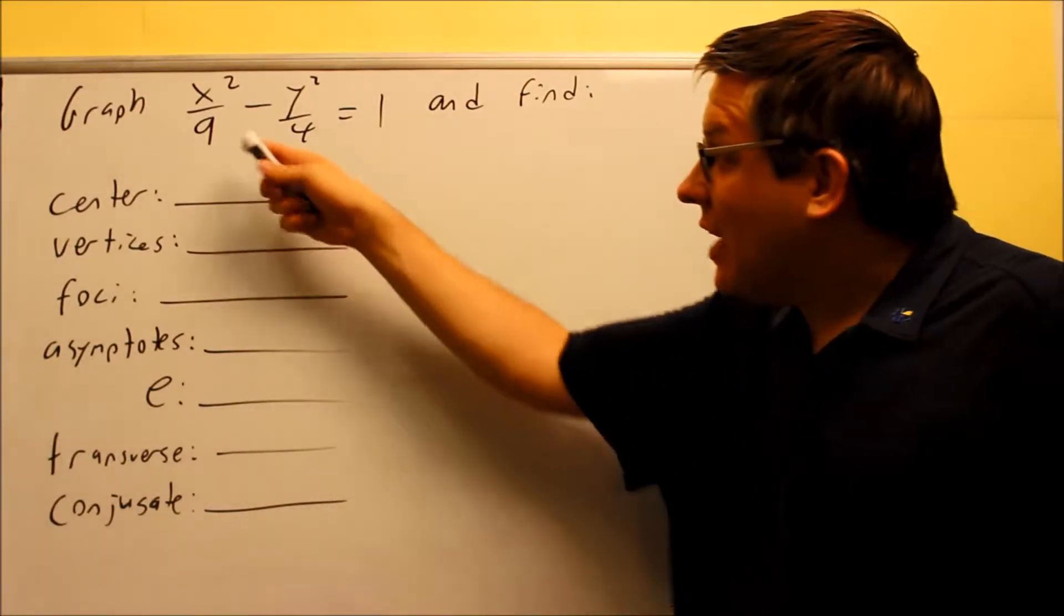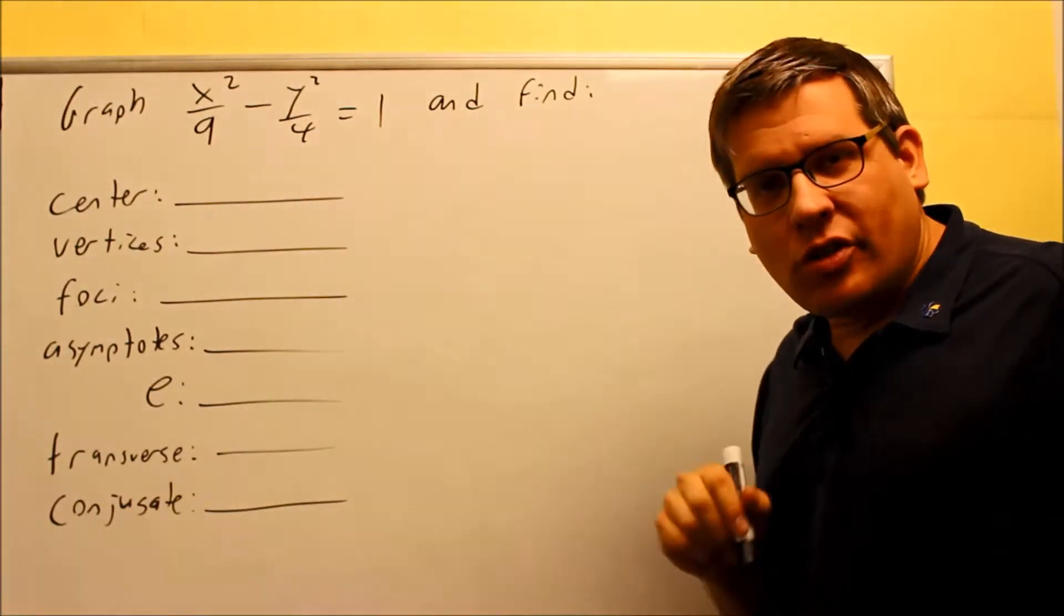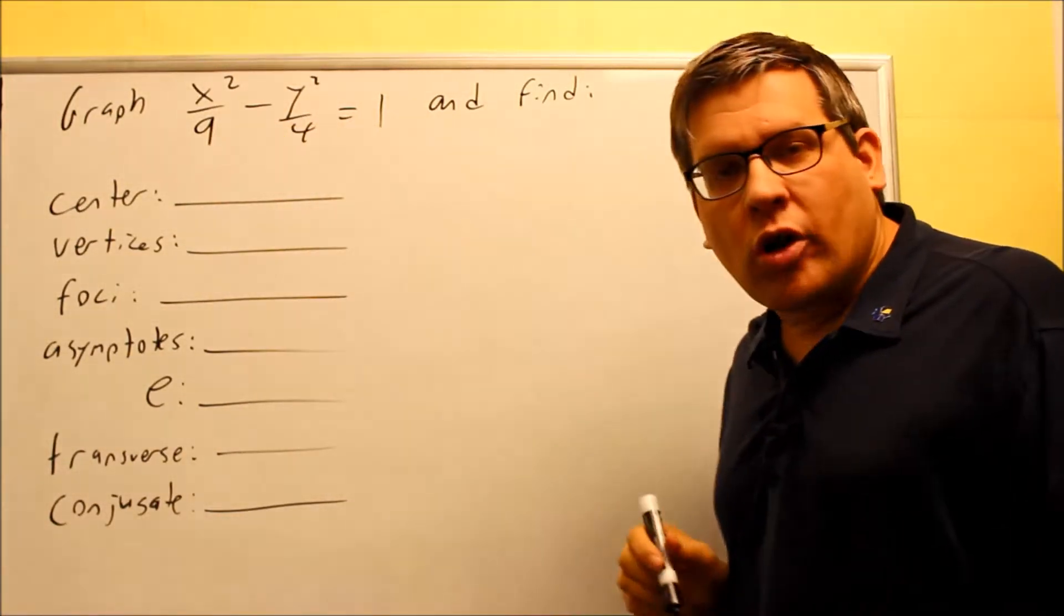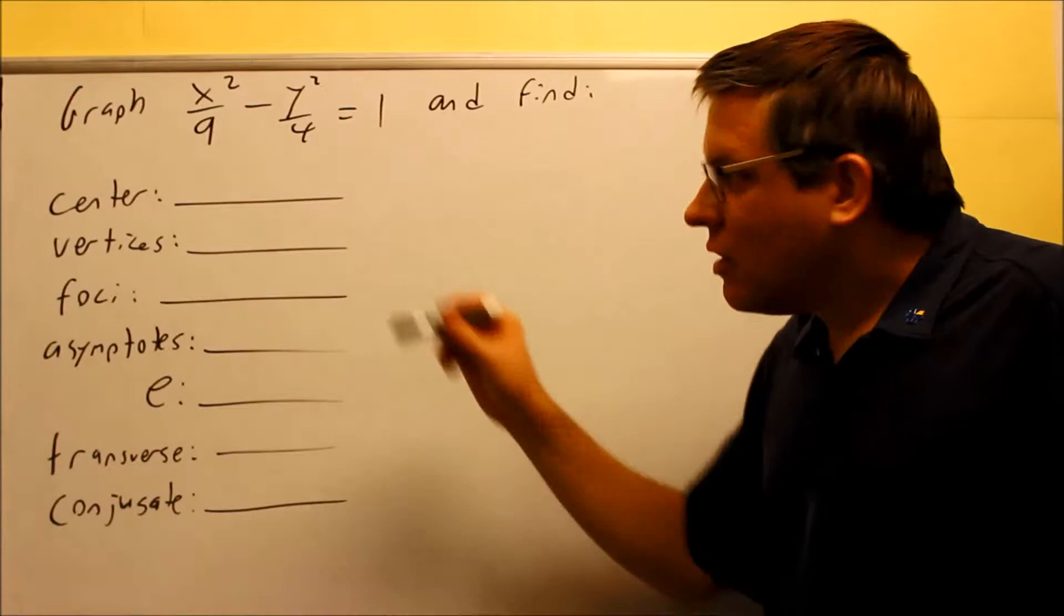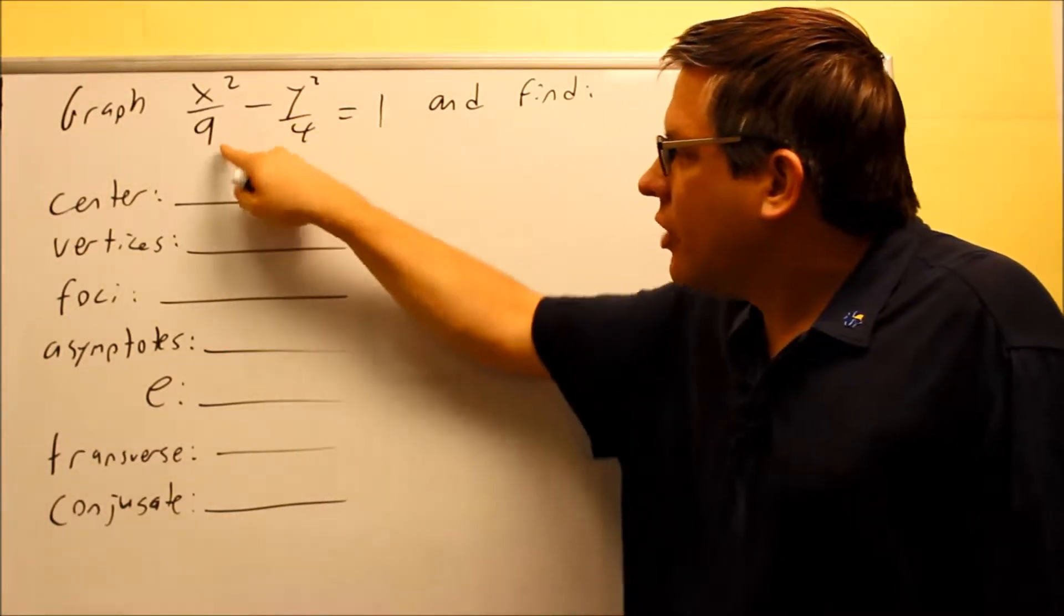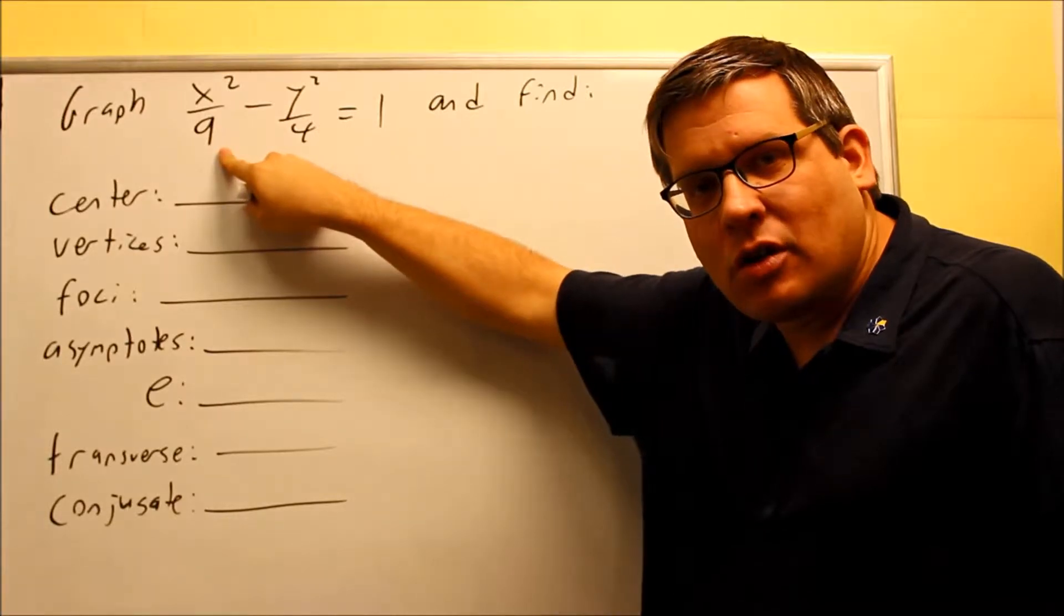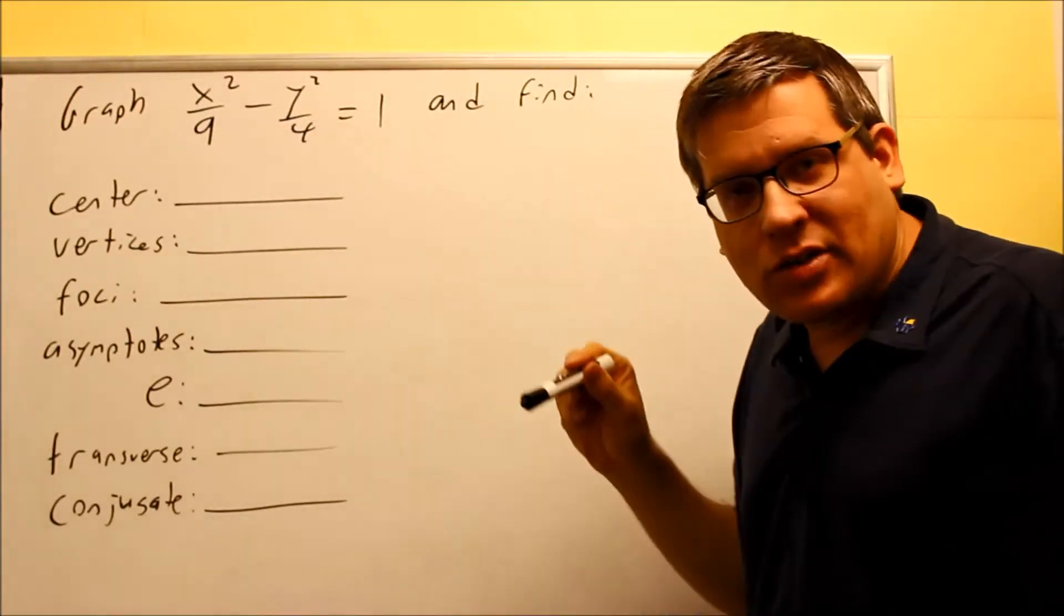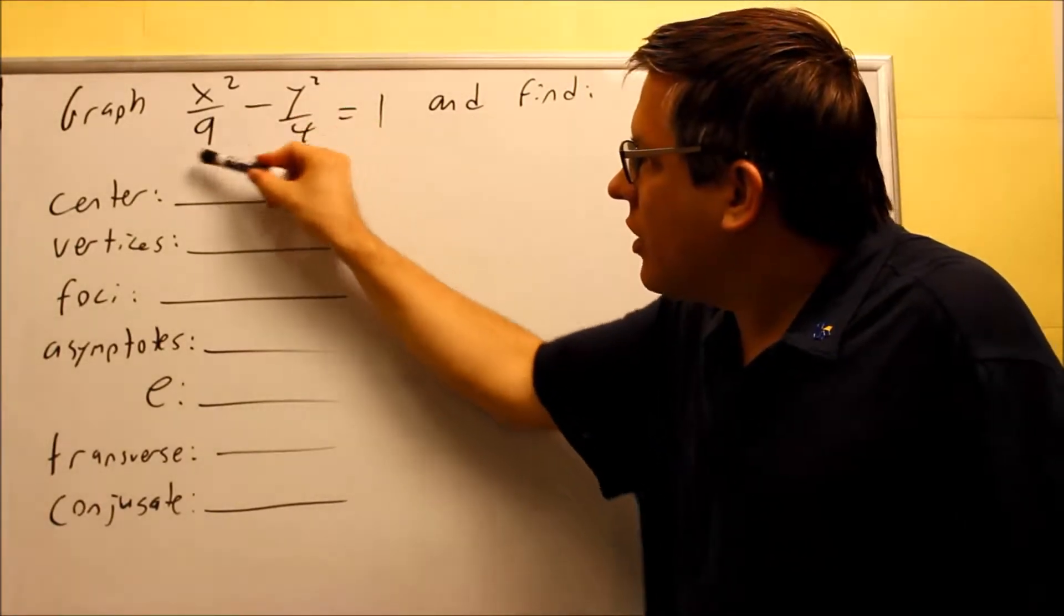With the a and the b here, unlike the ellipses, it doesn't actually matter where the larger number is. The a is always going to be physically whatever is underneath the fraction before the minus sign, so in front of the minus sign.